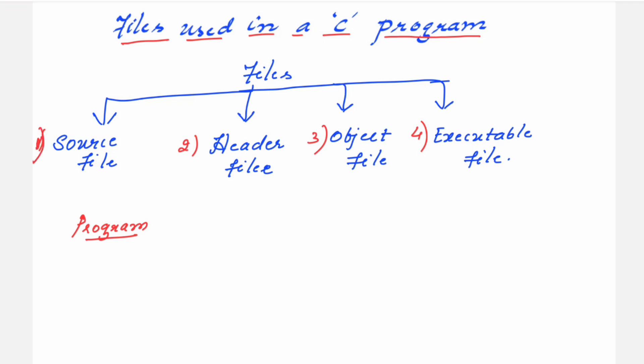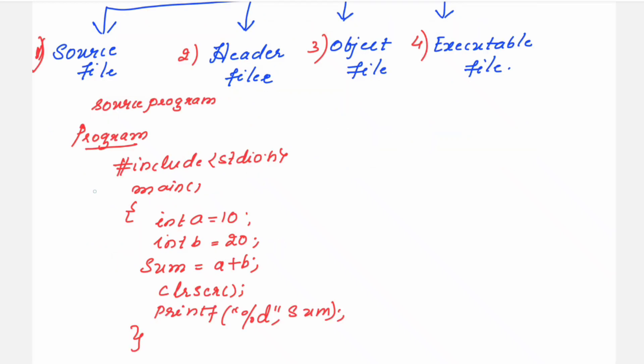So the first one we call it as the source file. Source file is your source program. Now what do you mean by source program? If you are writing a program to add two numbers, then you are writing like this. Now this is the program written here to add two numbers.